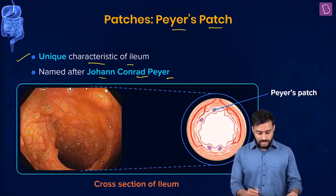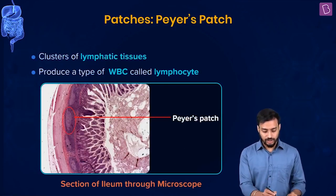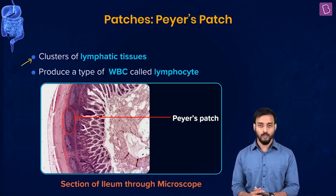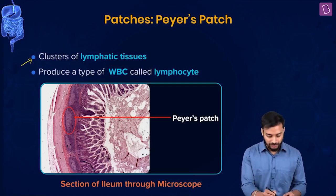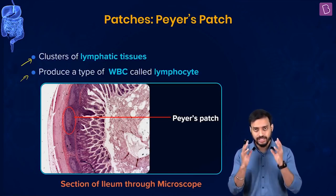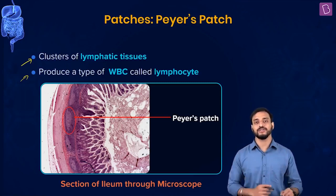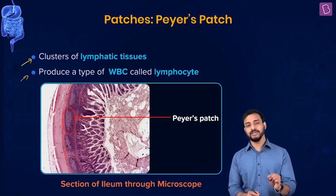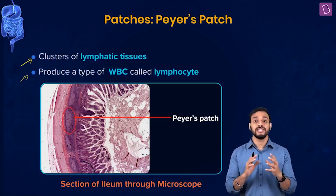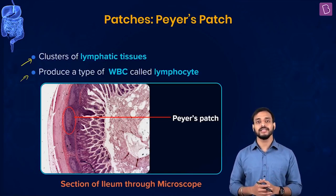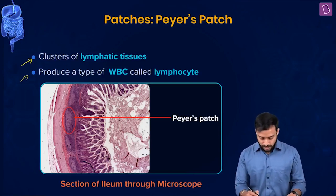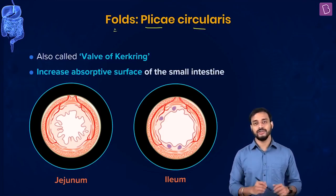Peyer's patches are clusters of lymphatic tissue. Since we're talking about lymphatic tissue, they produce a type of white blood cell called lymphocytes. Their function is to be an important part of the immune response - they monitor bacterial populations in the intestine and initiate the immune response if pathogenic bacteria are detected.